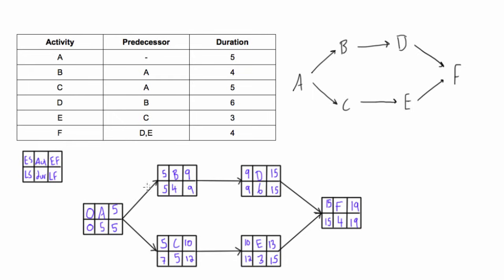You might see something interesting here. If you look at the top branch of our network diagram, activities A, B, D, and F, the early finish and the late finish are the same for all of these activities. For activity A, the early finish and late finish is both 5. For activity B, the early finish is 9 and the late finish is 9. Activity D, early finish 15, late finish 15. Same thing for F, both early finish and late finish are 19. When this happens we get something called the critical path.